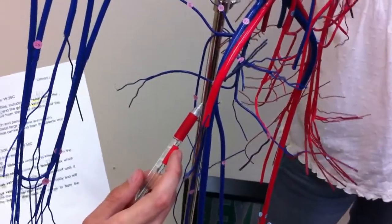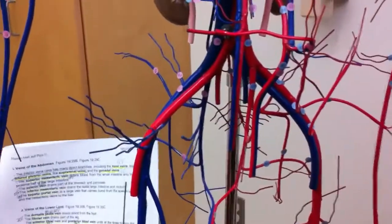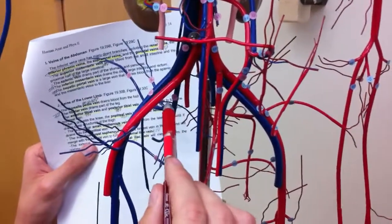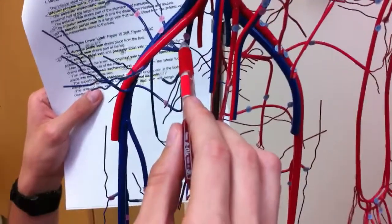And last we got the internal iliac vein, which is number 59, and that is right there. That's the internal iliac vein, number 59.